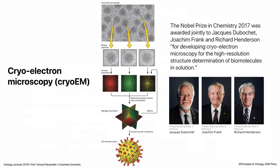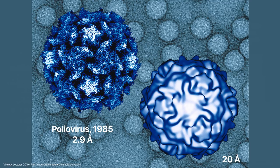Here are two examples. On the upper left, poliovirus — the x-ray structure was solved in 1985, one of the first animal viruses, at 2.9 angstroms resolution. You can see all the alpha carbons and all the side chains — every atom is displayed. On the right is the cryo-EM structure of polio at 20 angstroms — you get much less information, just an approximation of the surface, which can be useful but is not great. The two viruses on the front are both poliovirus, built with some kind of symmetry.